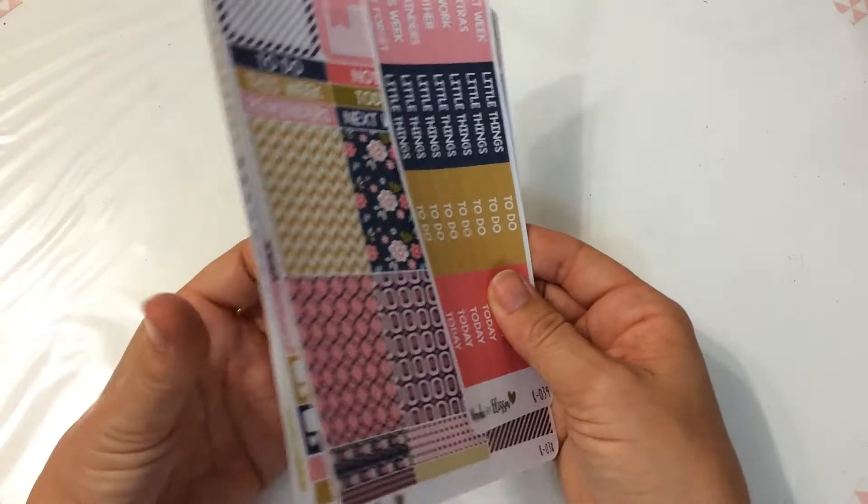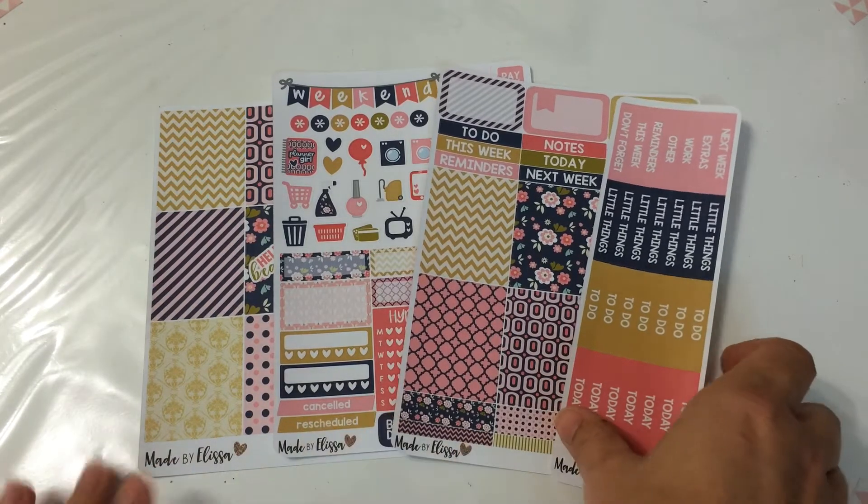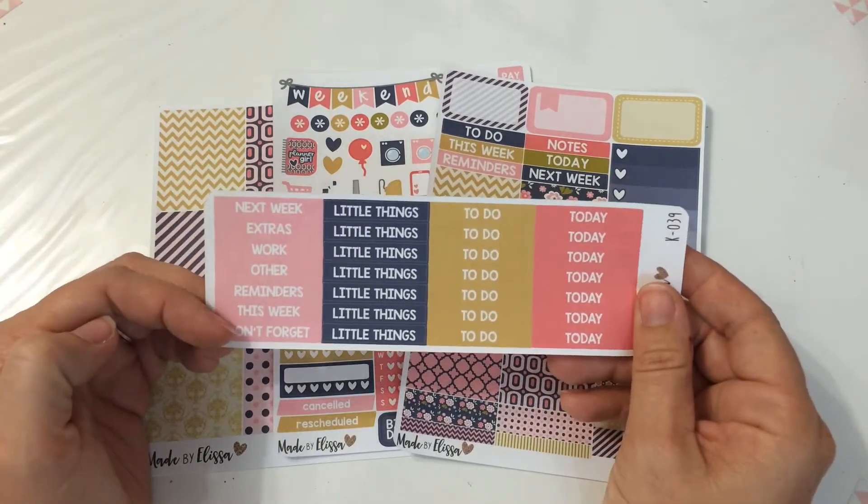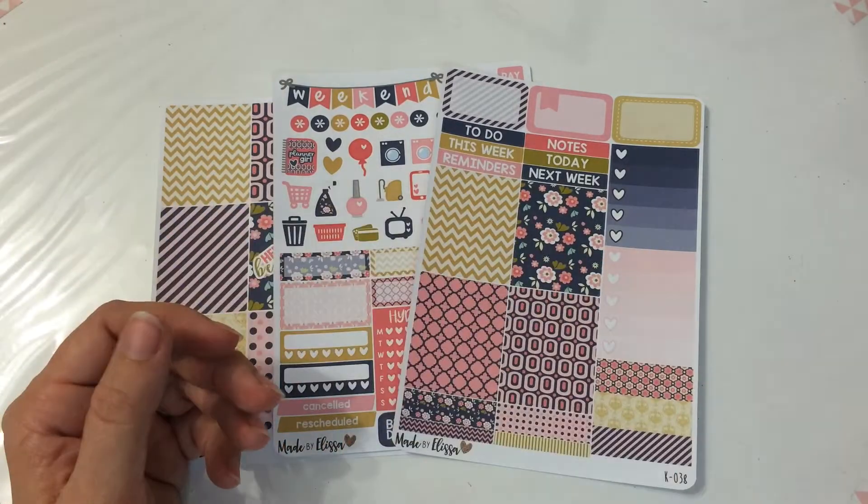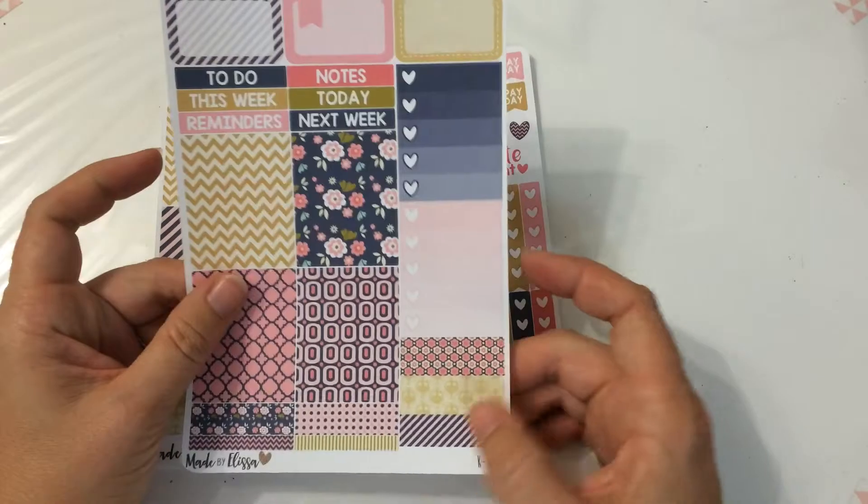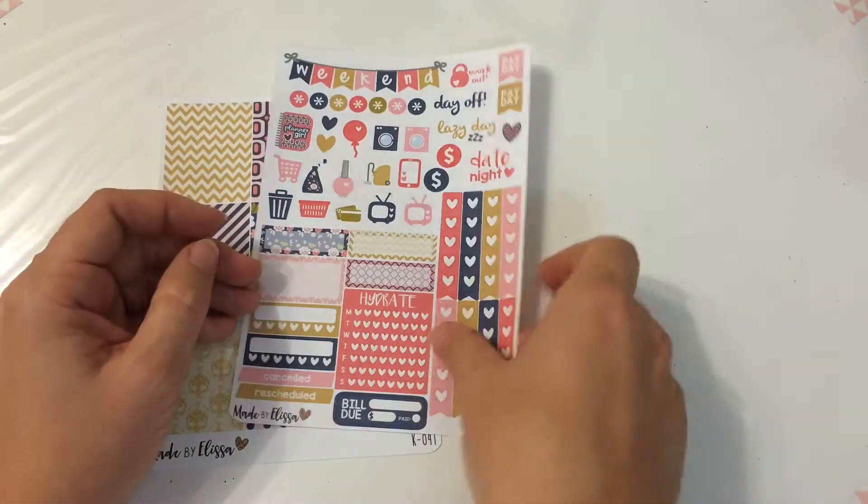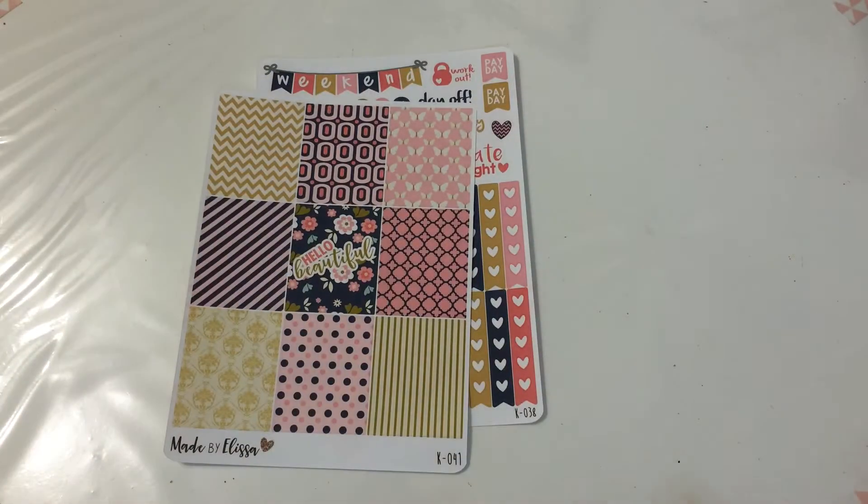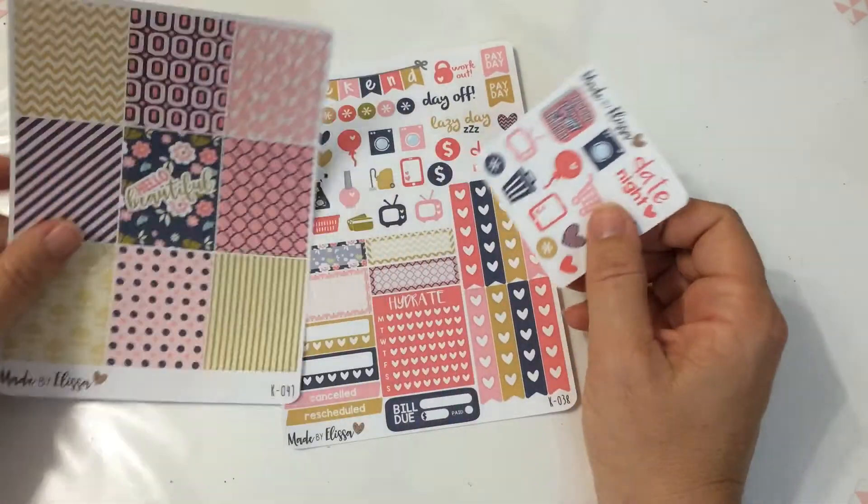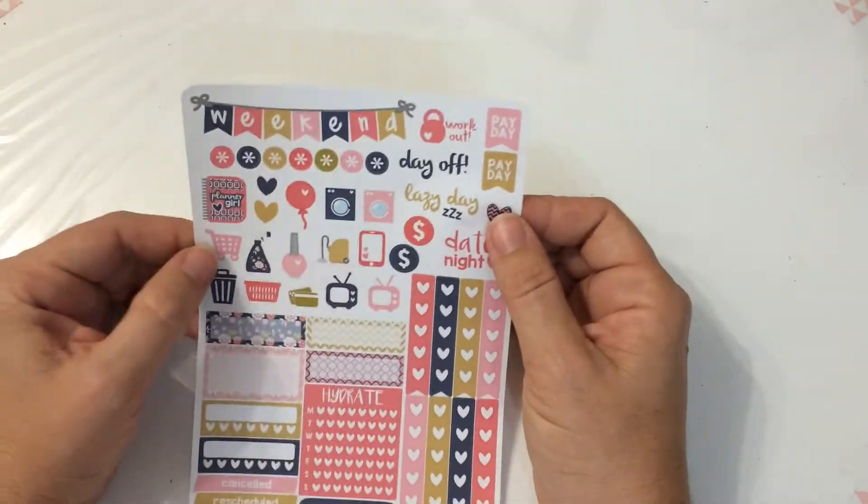Then this is a little kit which I bought all separately I'm pretty sure. It's called the Cordelia collection. I got the headers, little things to do and today. This one's got some full boxes, some washi, some ombre heart checklists and half boxes. I use half boxes and quarter boxes a lot. Then the kind of sampler page with the weekend banner and all the icons.